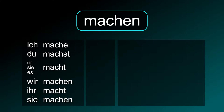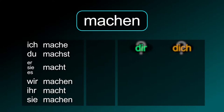Machen conjugation: ich mache, du machst, er/sie/es macht, wir machen, ihr macht, sie machen. This verb needs the accusative or the accusative plus the dative case.